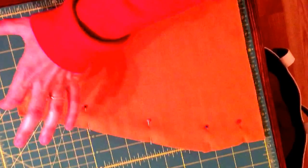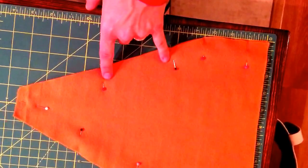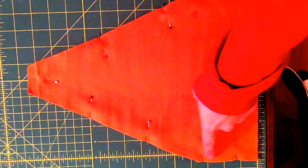Then I pinned it together, leaving a four to five inch hole so I can turn it right side out. I'm going to do a half-inch seam all along here, making that a point. Stop here, start here, and go here.